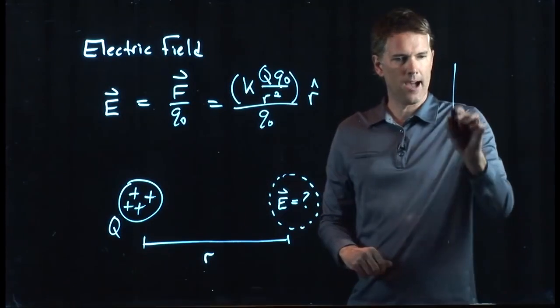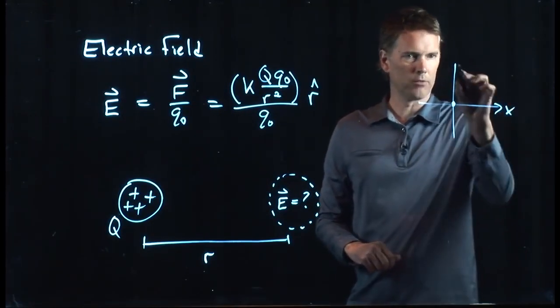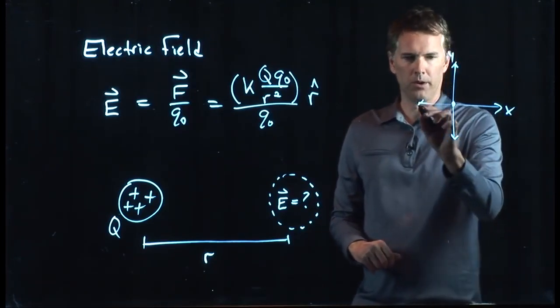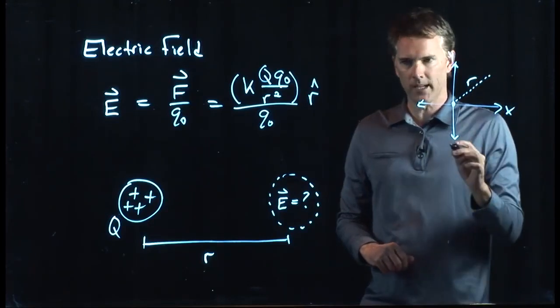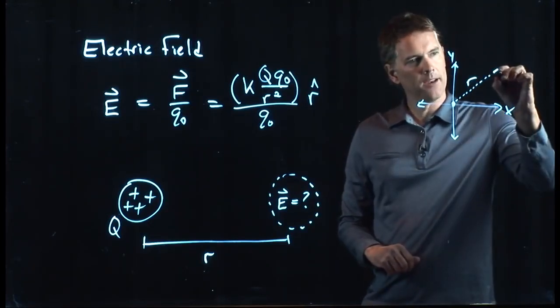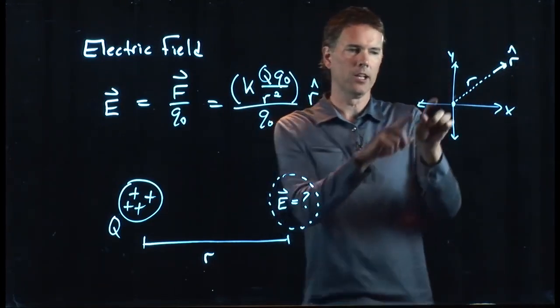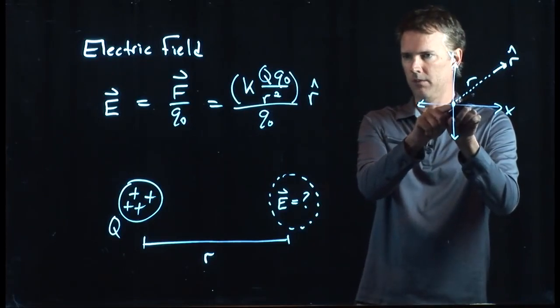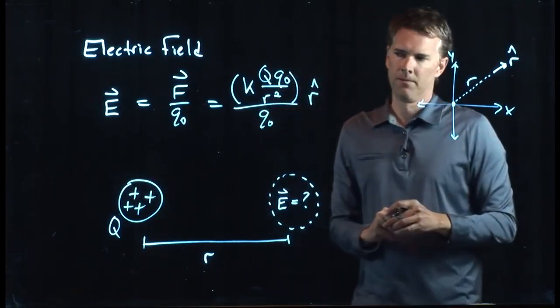That's out radially. So if you have a point charge sitting at the origin, this is our XY coordinate system. Remember, we talked about polar coordinates. R is along a radius. So R-hat is a radial unit vector. It's pointing away from the origin in this case. It would be pointing away from the charge.